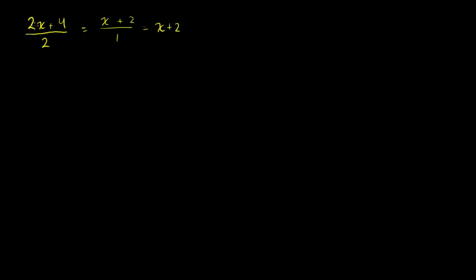Another way is you could have factored a 2 out, and then those would have canceled out. But I'll also show you how to do it using algebraic long division, which is a bit of overkill for this problem. I just want to show you that it's not fundamentally anything new — it's just a different way of doing things, but it's useful for more complicated problems. So you could have written this as: 2 goes into 2x plus 4 how many times? You perform this the same way as traditional long division. You'd always start with the highest degree term.